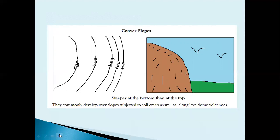For convex slopes, looking at the map, we can distinguish the top of the slope from the bottom based on the values of the contour lines. At the top of the slope the contour lines are far apart, and at the bottom they are closely spaced, which means the land is gentle at the top and steep at the bottom.